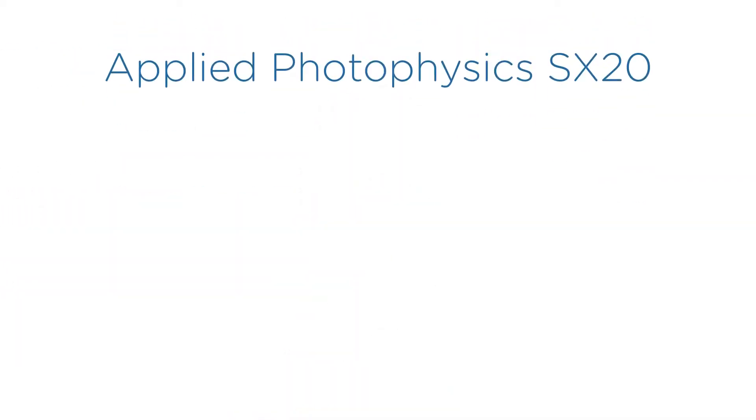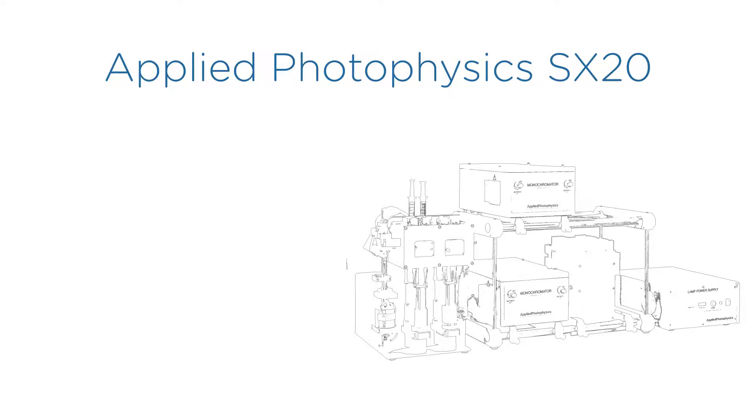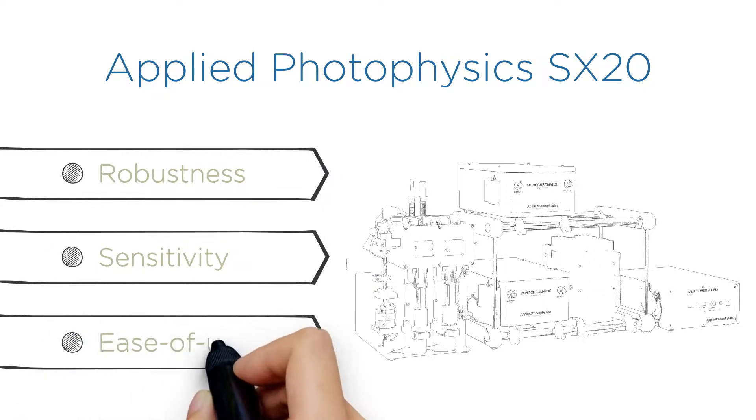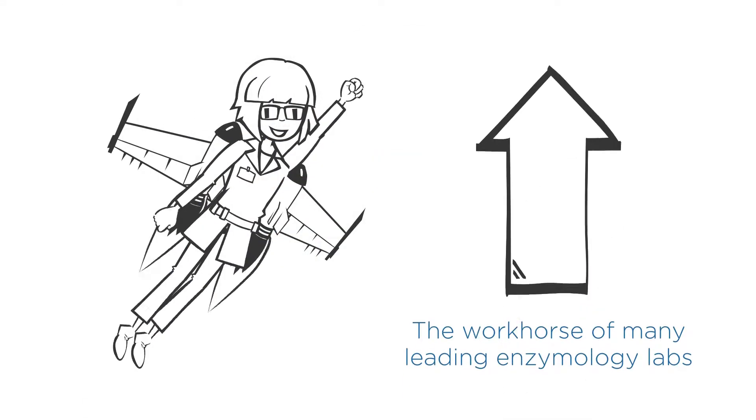The Applied Photophysics SX20 is the market-leading stopped-flow spectrometer for pre-steady-state studies, with robustness, sensitivity and ease of use, making it the workhorse of many leading enzymology labs around the world.